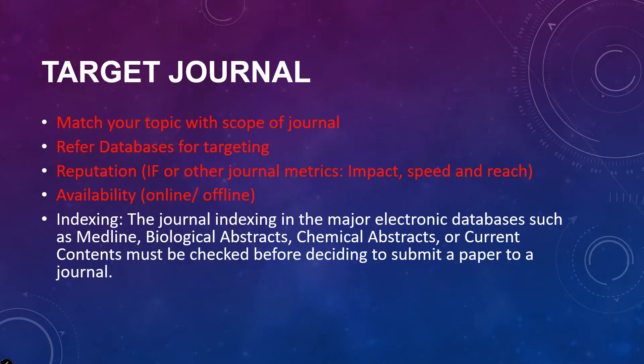Now comes another aspect: indexing. A journal might not have a good impact factor, but if it has good indexing in major indexing agencies like Chemical Abstracts, PubMed, Embase, Web of Science, and other services, you can target them. You must have your own priority. If you are not able to target a high impact journal, you can also target a journal with good indexing instead.